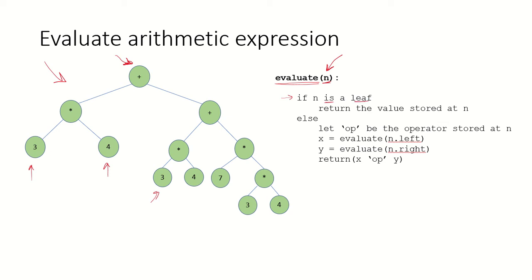If it is a leaf, we will simply return the value stored at that leaf node. If it is not a leaf node, we will check what operator is stored at node n. Then we call this evaluate function recursively on its left subtree and get its value in x. Then we call evaluate on its right subtree and get its value in y. Finally, whatever operator was at node n, we perform that operation with the two variables x and y.